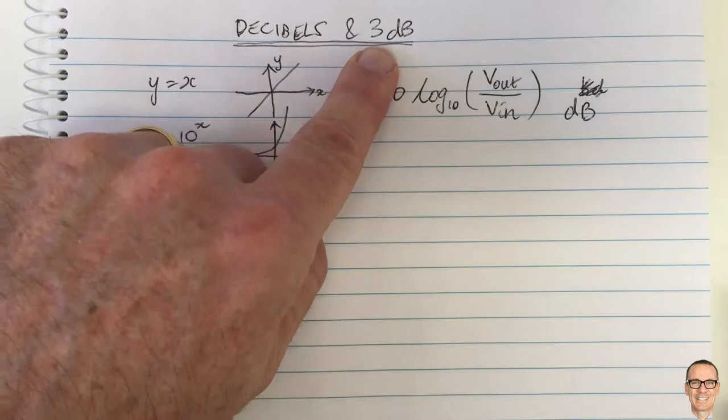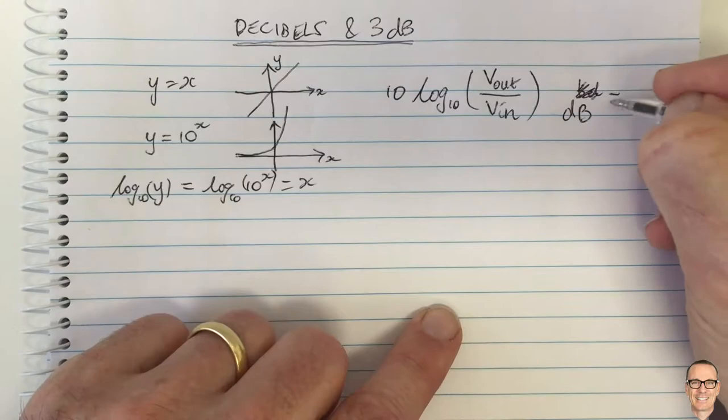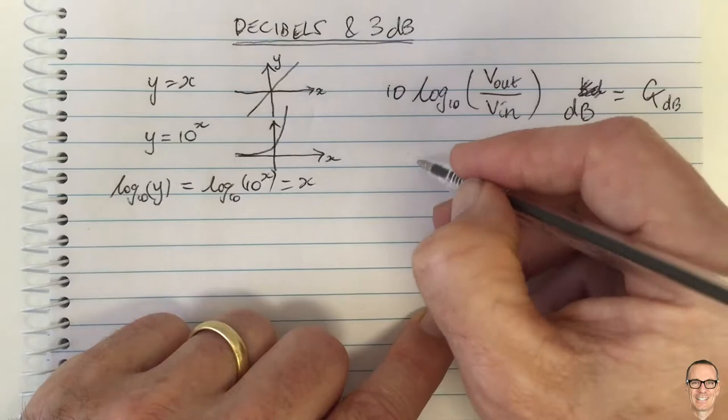And so why is this interesting and useful and where does this 3 dB come about? Well let's just notice if you were doing something to your circuit where you doubled the output voltage for the same input voltage then how would that relate to this? Let's say this is your gain in decibel and then if we double that what do we get?